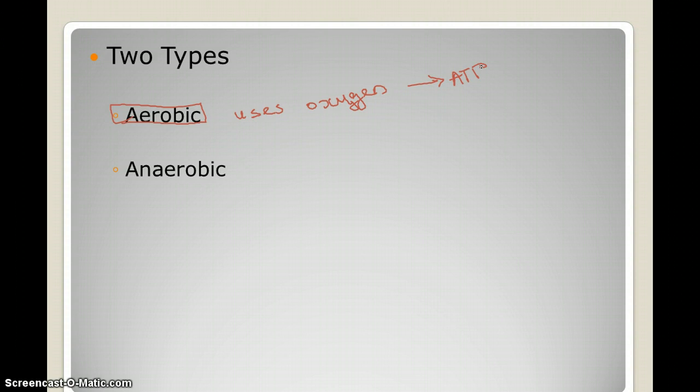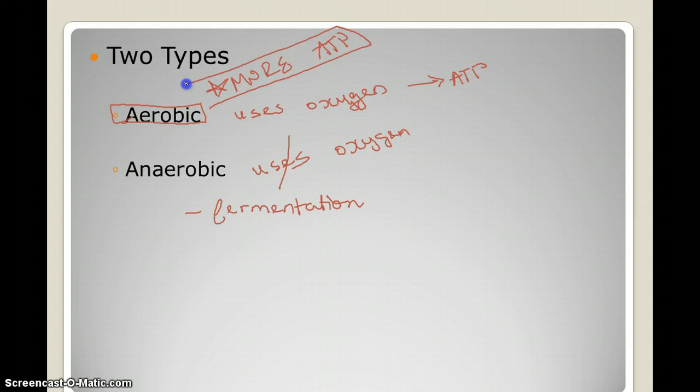Anaerobic respiration does not use oxygen to create ATP. It uses other processes, and anaerobic respiration has fermentation in it. However, we must understand that aerobic respiration creates more ATP. Anaerobic creates less. What we also need to understand